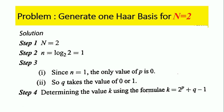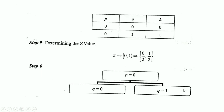From the p and q values we can determine k: k equals 2^p + q − 1, where q is either 0 or 1 and p equals 0. When p equals 0 and q equals 0, k equals 0; when p equals 0 and q equals 1, k equals 1. The z values are 0/2 and 1/2.